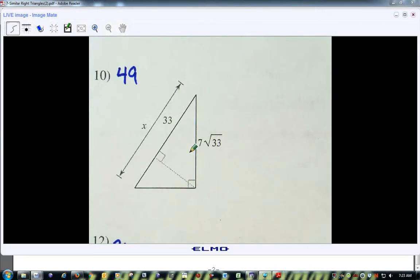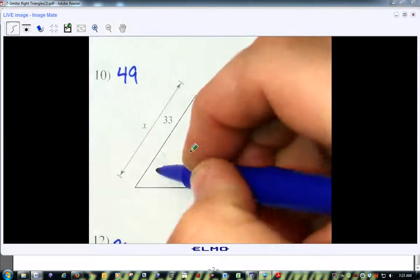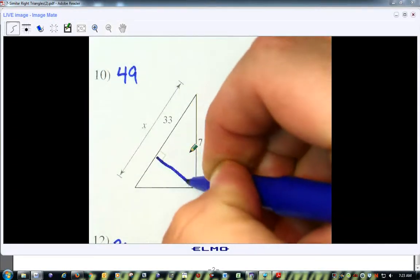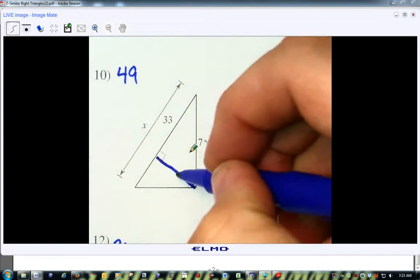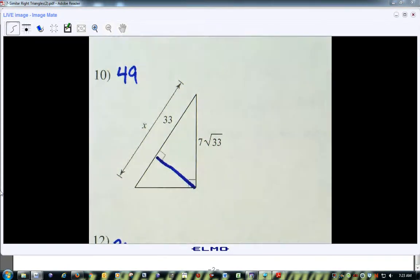In these cases, when we're dealing with similar right triangles, the key is this: it's this segment right here, that altitude. If we know what that altitude is, that's going to tell us what we're going to end up having to do.